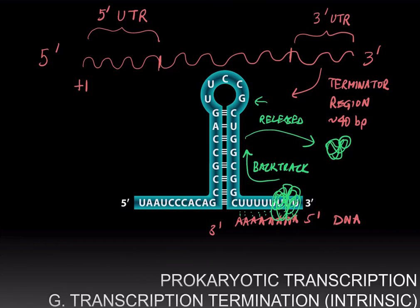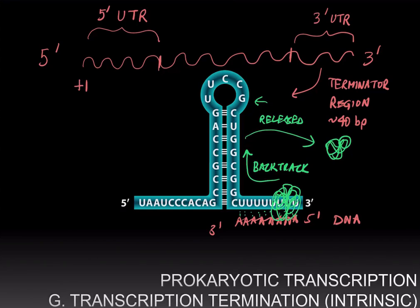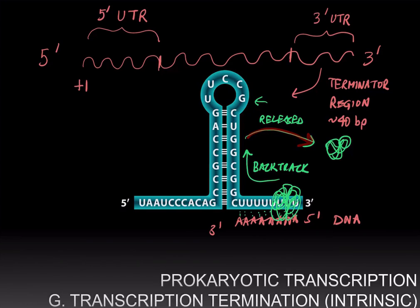To recap: there is a CG-rich region in the terminator region within the 3' UTR that causes the formation of a hairpin loop in the RNA. This CG-rich region is followed by a stretch of U's on the RNA and A's on the template DNA, which is a region of relatively weak hydrogen bonding. When the polymerase reaches this region, it backtracks due to the weak hydrogen bonding but is stopped by the hairpin loop, causing the release of the polymerase and termination of transcription.